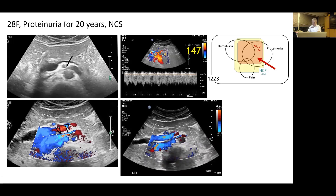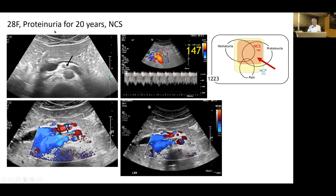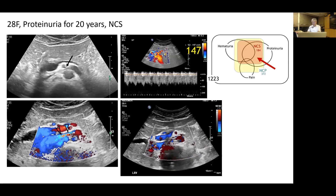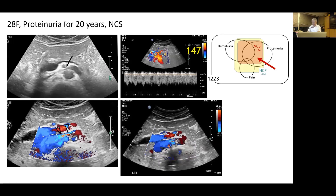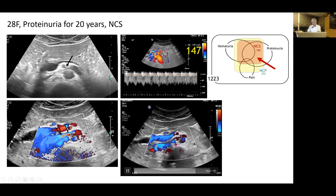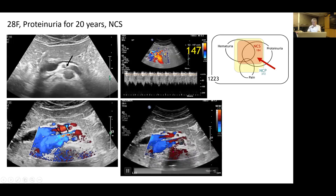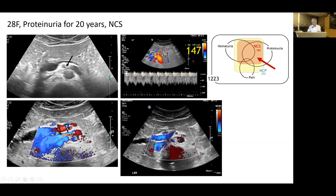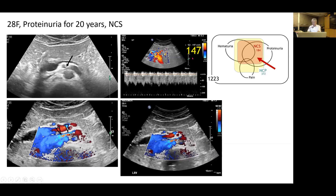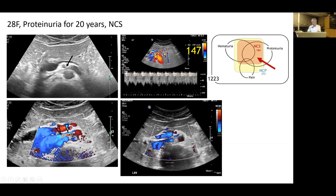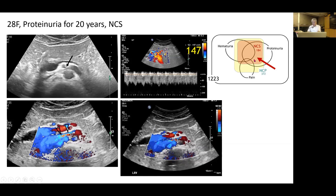A 28-year-old woman found to have proteinuria for 20 years — since childhood, she was told her kidney may have problems of unknown cause. She visited my clinic; grayscale ultrasound shows narrowing of the aorto-mesenteric left renal vein, and color Doppler ultrasound shows jetting of bright colored flow from the narrowed segment with a peak flow velocity of 147 cm/s. She was diagnosed with Nutcracker syndrome with proteinuria.